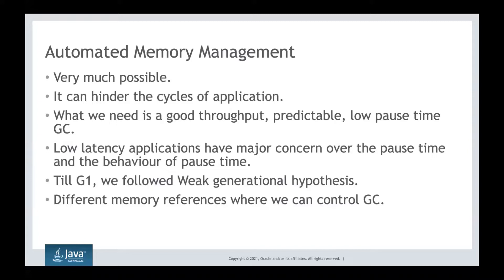When I say 'reduce the performance,' understand that your application may be running through 16 threads and memory management might say it needs 5 of those 16 threads. That is reducing the throughput of the application.